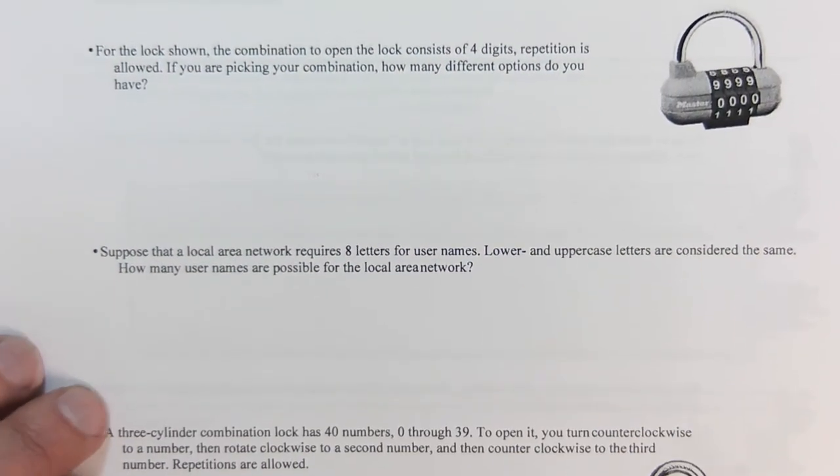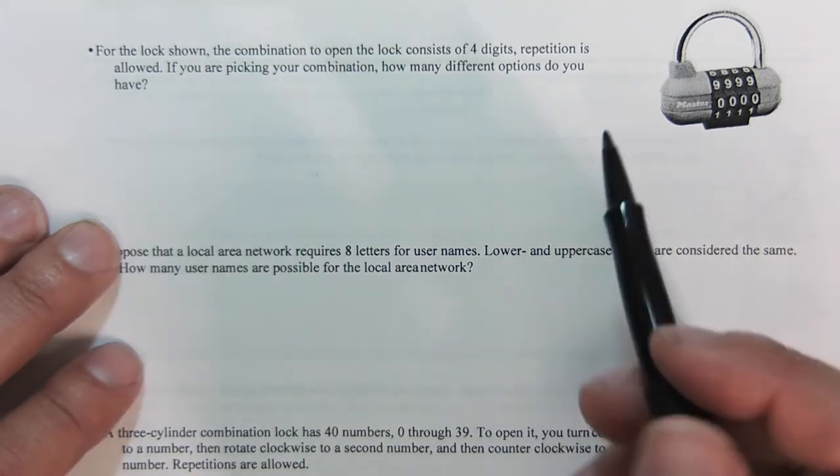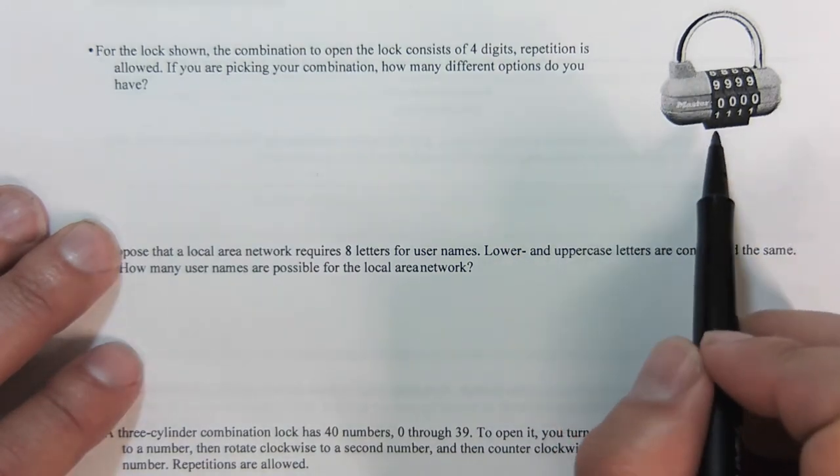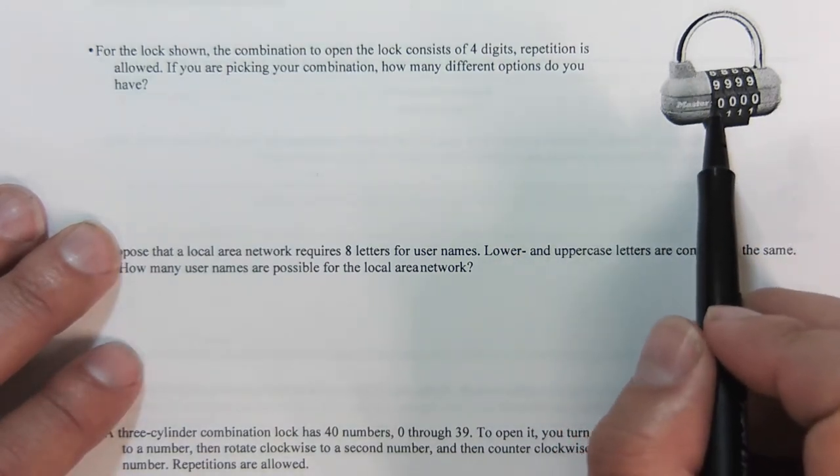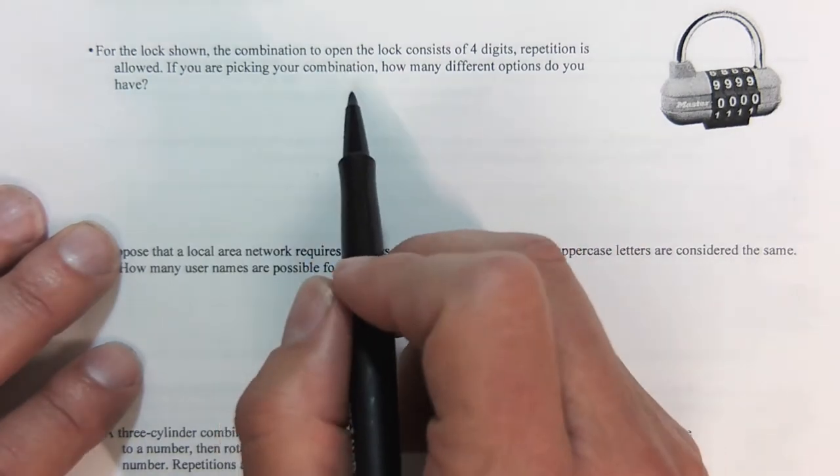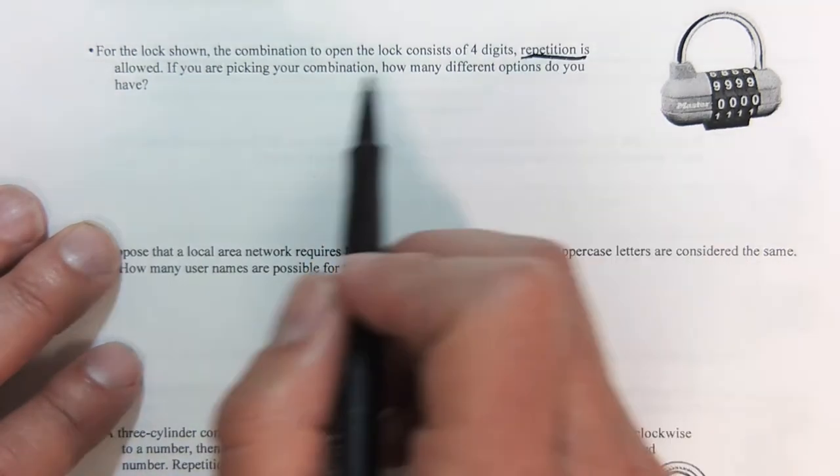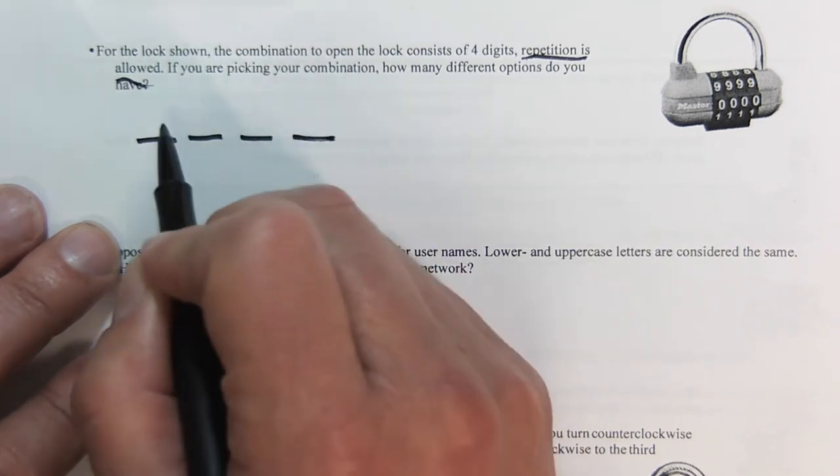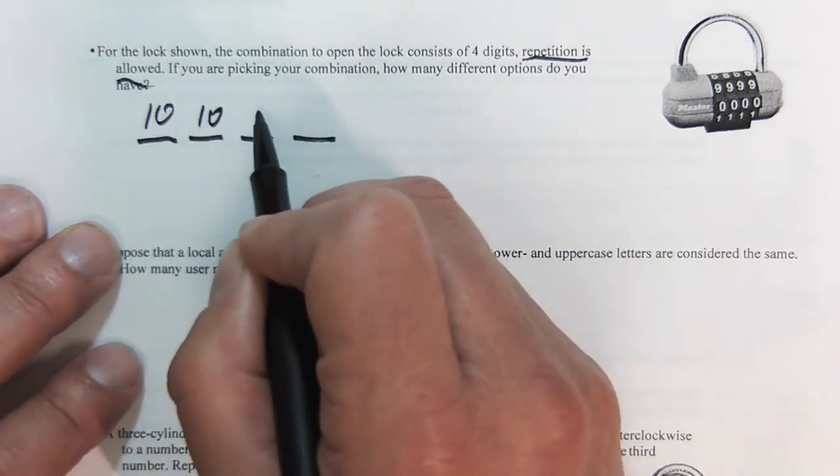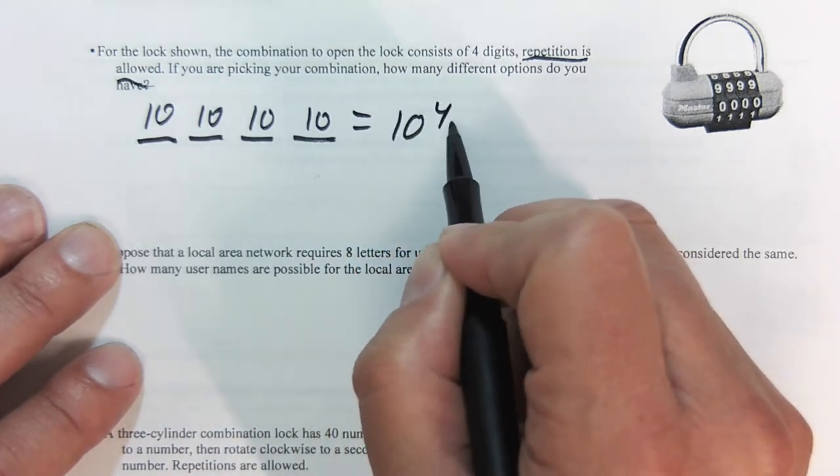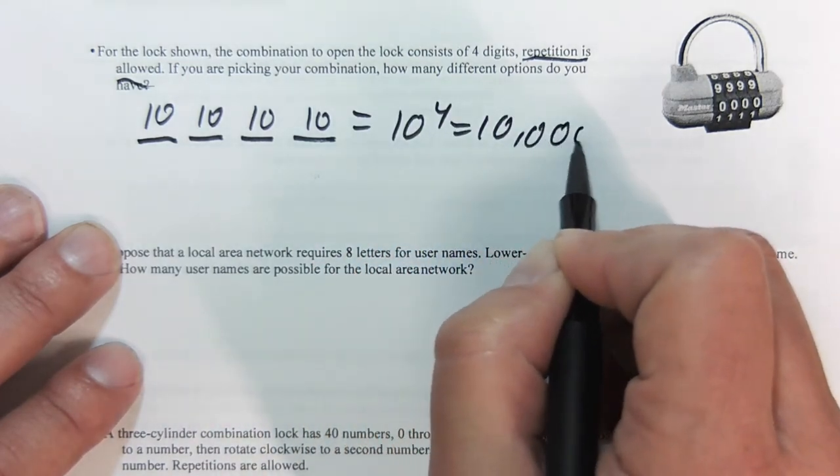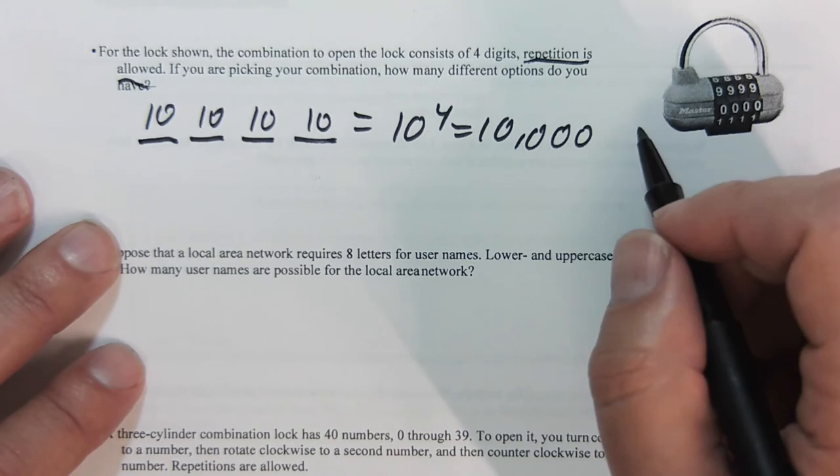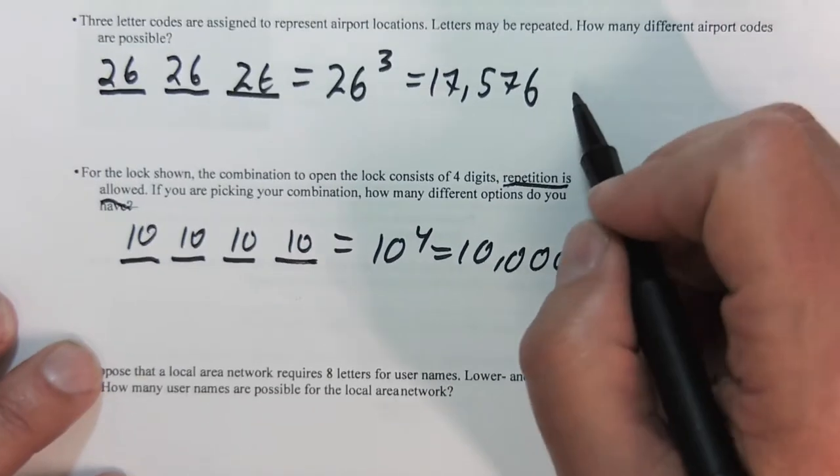So I got 17,576. Let's do another one. The lock shown consists of four digits, and on each ring there are actually 10 digits, right? 0 to 9 makes up 10. So if we are picking this and repetition is allowed, then that means that we have 10 times 10 times 10 times 10, or 10 to the 4th. 10,000 different combinations.